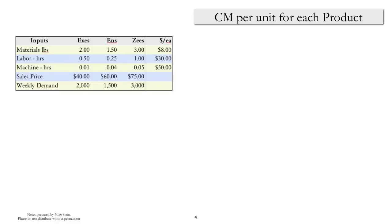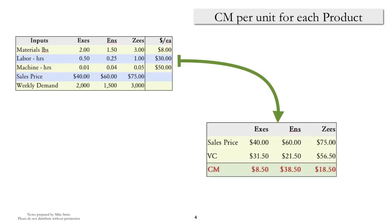We'll need to determine the contribution margin for a machine hour. The first step in doing that is to figure out the contribution margin for each of the three products. Calculating contribution margin isn't too tough. It's just the sales price minus the variable cost. So the only work we have to do here is to determine the variable cost for each of the three products.